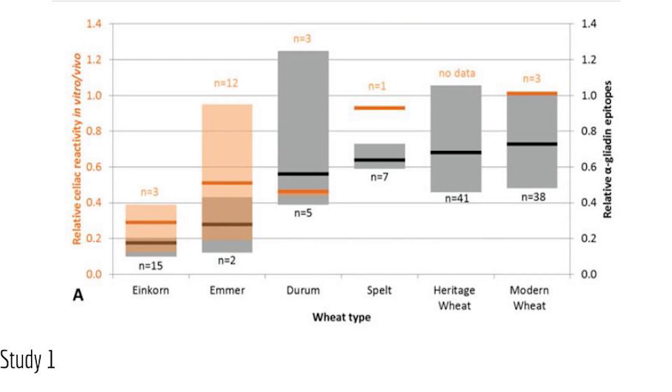Just because a single person doesn't respond well to wheat doesn't mean it is always the gluten. Wheat is composed of a variety of different things, and individuals can have reactions to different non-gluten parts of wheat. This next section highlights the reactivity of different individuals to different types of wheat — specifically related to gluten and gliadin. Einkorn has the lowest reactivity, measured through blood-based studies to determine the amount of immune reaction to the gliadin molecules.